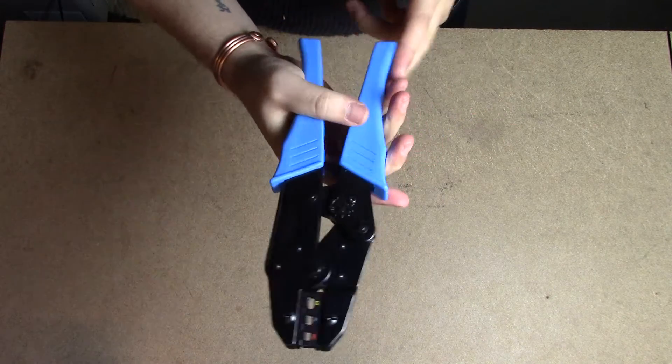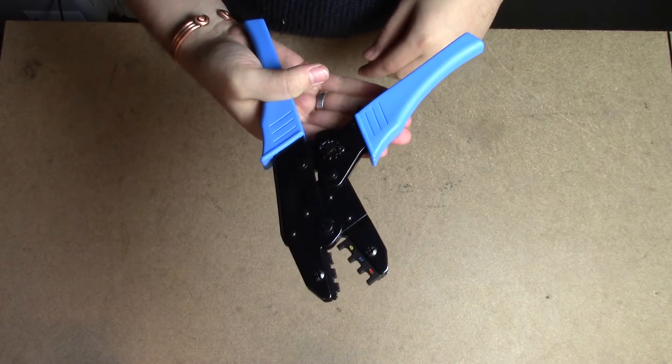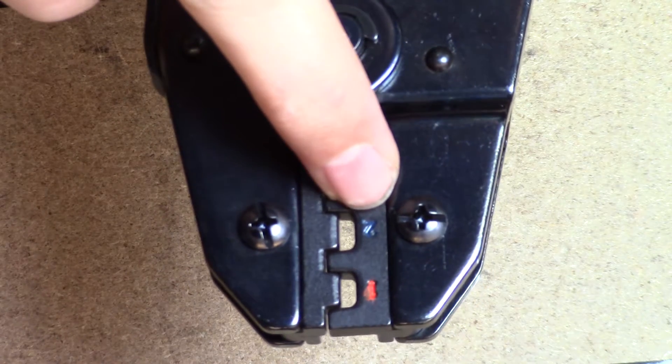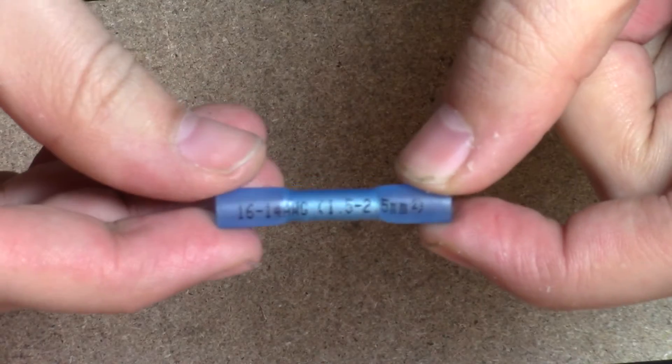Again, these are available on our website and links will be in the description below. As you can see, it is also color coded, and this just helps you pick the size of the die that you need for the terminal that you're trying to crimp. So let's get started.